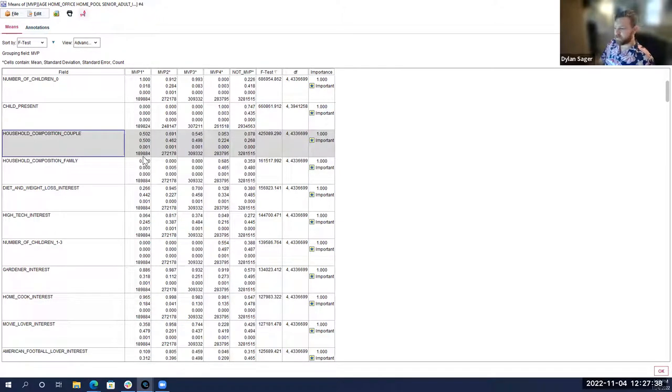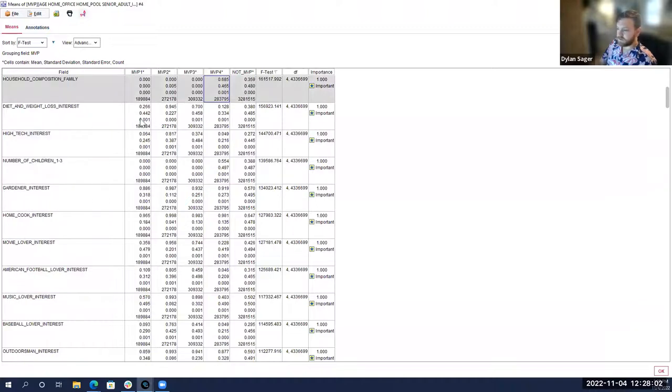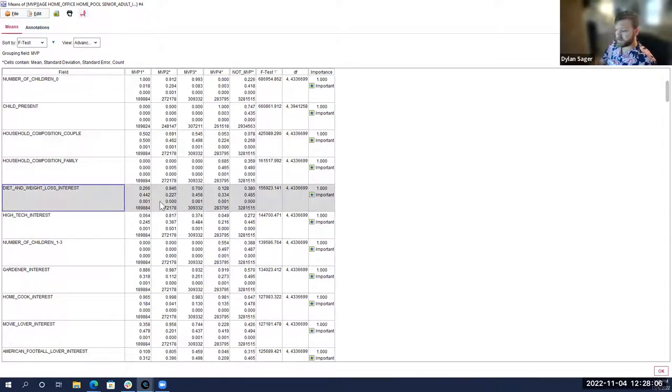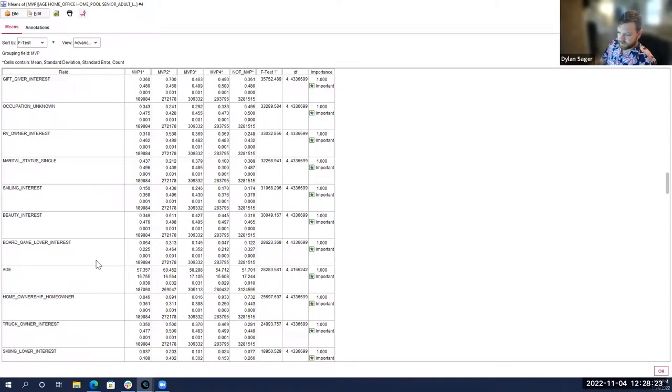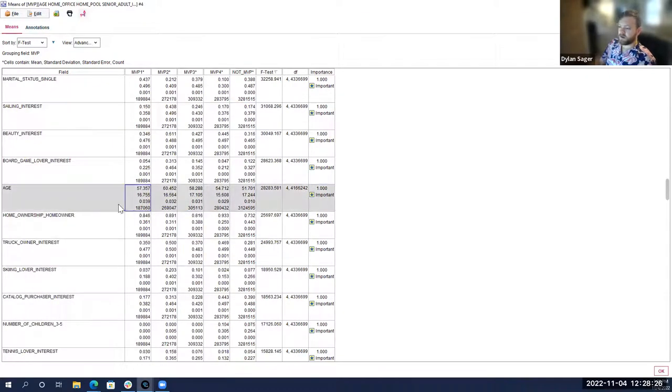MVP one, it's about 50%, so it's kind of a mix of couples and non-couples to over index on couples. Three is kind of in the middle as well. Four, obviously they're falling more into that family group. You can also see diet and weight loss. MVP two tends to have a high affinity for weight loss and dieting. I always like to look at the ages of groups. You can see the age of these groups are higher than the not MVPs.